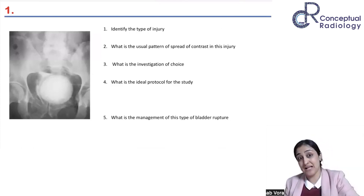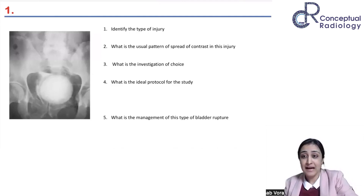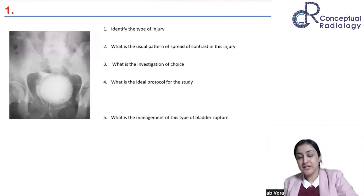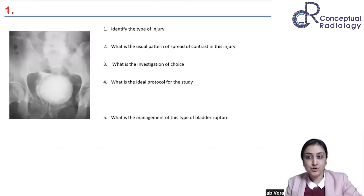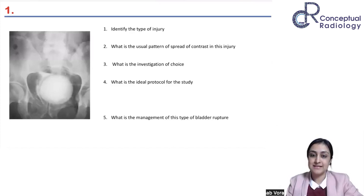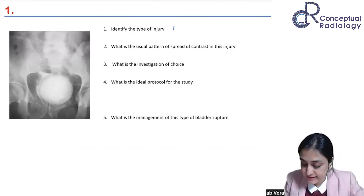I want all of you to answer first in the chat, then I'll move forward. Two marks each question. Most of you are saying bladder injury — this is indeed bladder injury, not urethral injury. This is a conventional cystography. You can see the contrast is perivesical; it is not going anywhere else. It is in the perivesical space, which suggests the ideal exam answer is extraperitoneal bladder rupture.